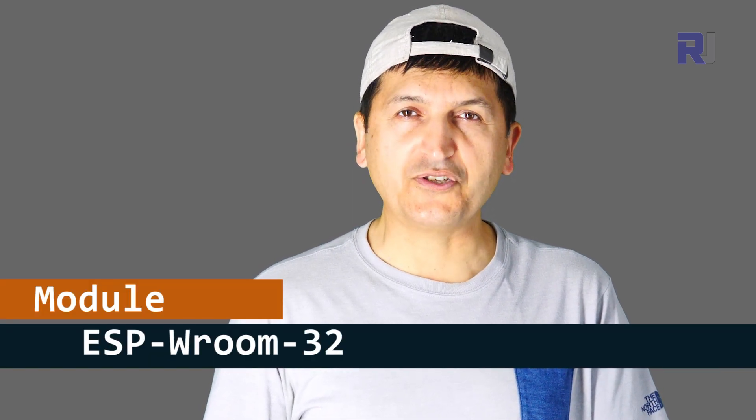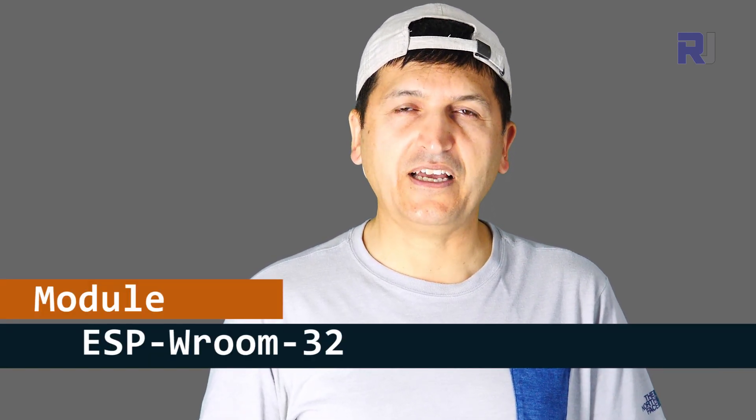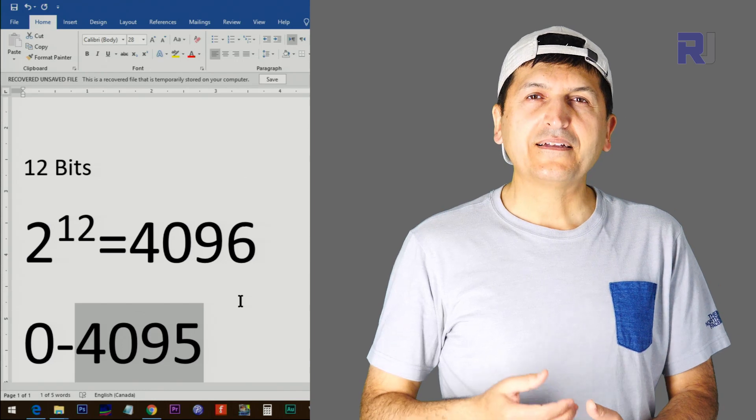ESP32 module has different variations. The one that we are discussing in this video is ESP-WROOM-32 which has 16 analog inputs. We can use different GPIO as analog input and I'm going to show you that.